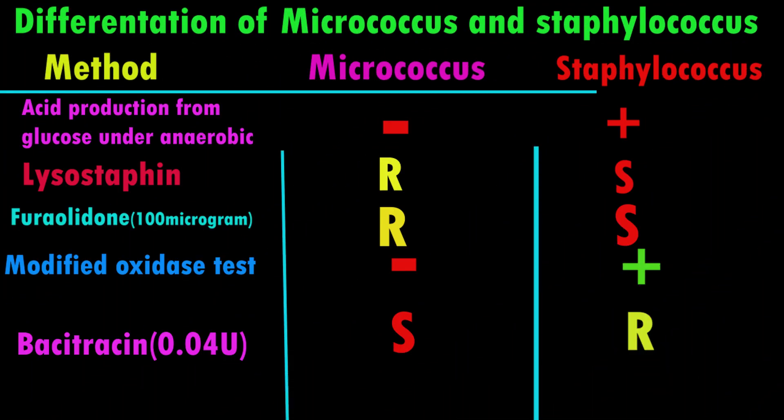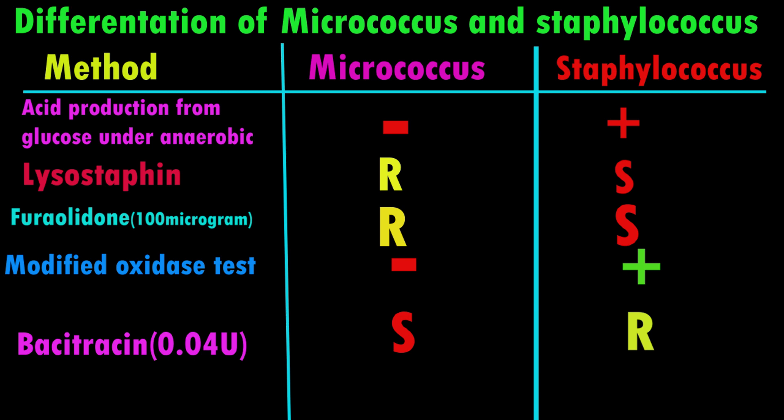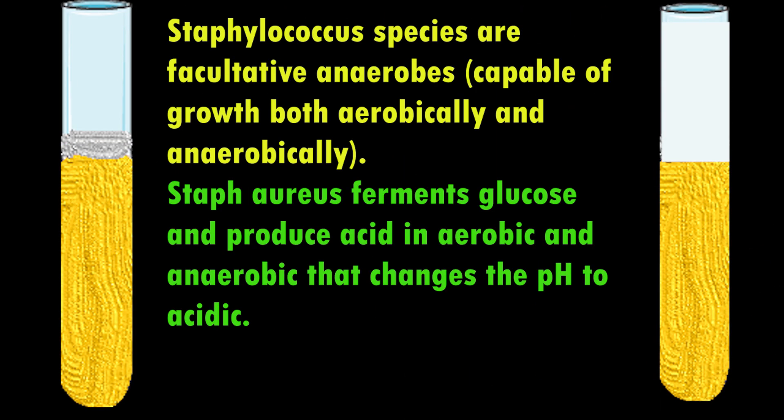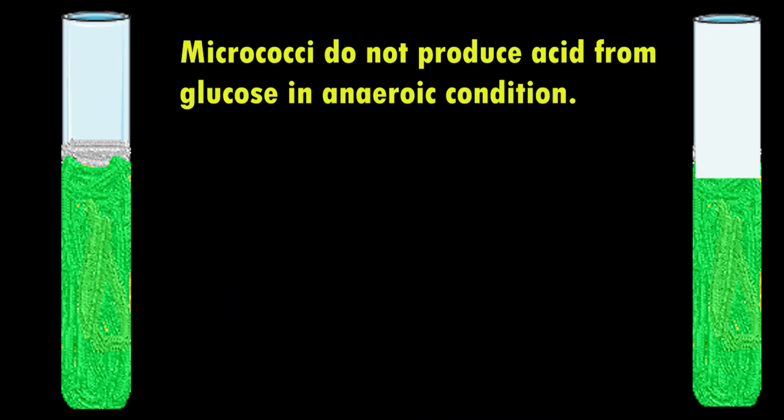There are many biochemical tests to differentiate between Staphylococcus and Micrococcus. The first and simplest method is the oxidative-fermentative (OF) test. Staphylococcus are facultative anaerobes — they grow in the presence and absence of oxygen — whereas Micrococcus are oxidative strict aerobes, so they can be differentiated.